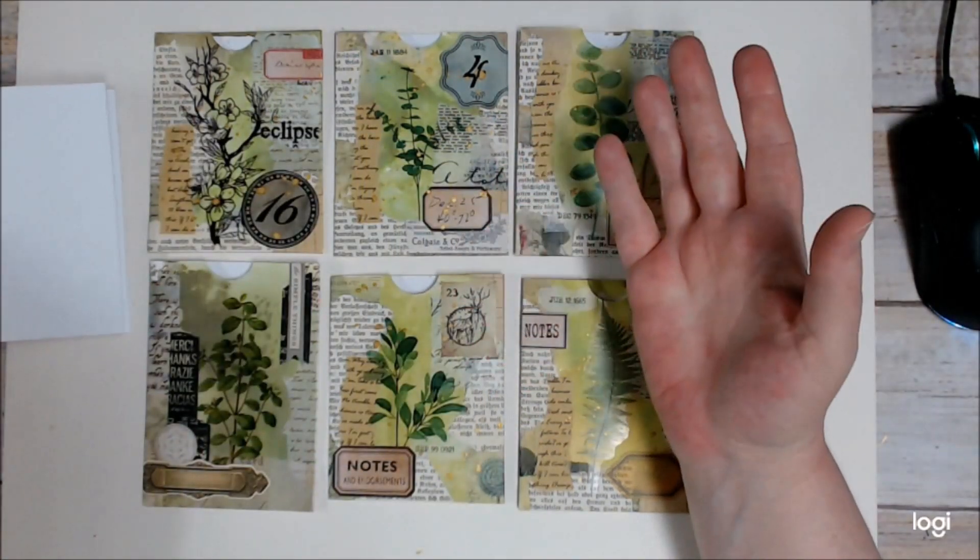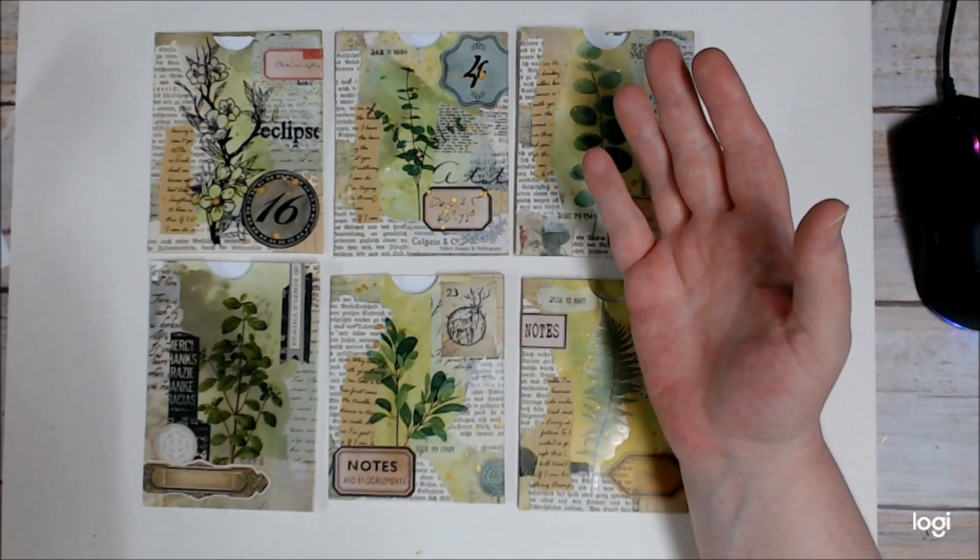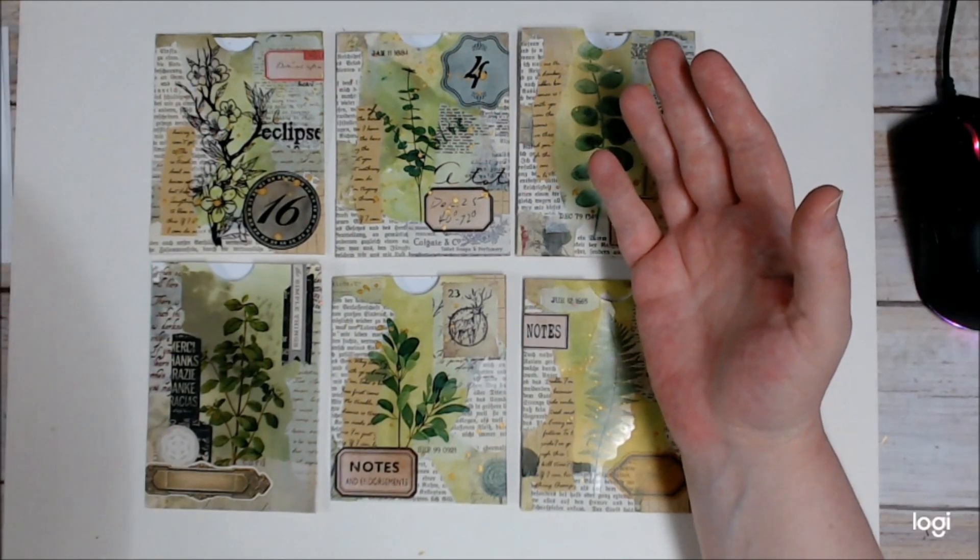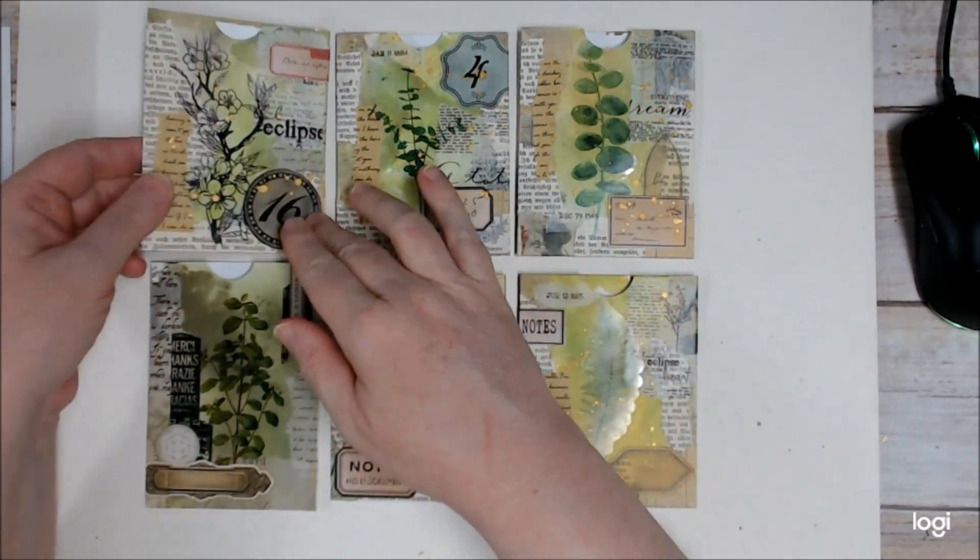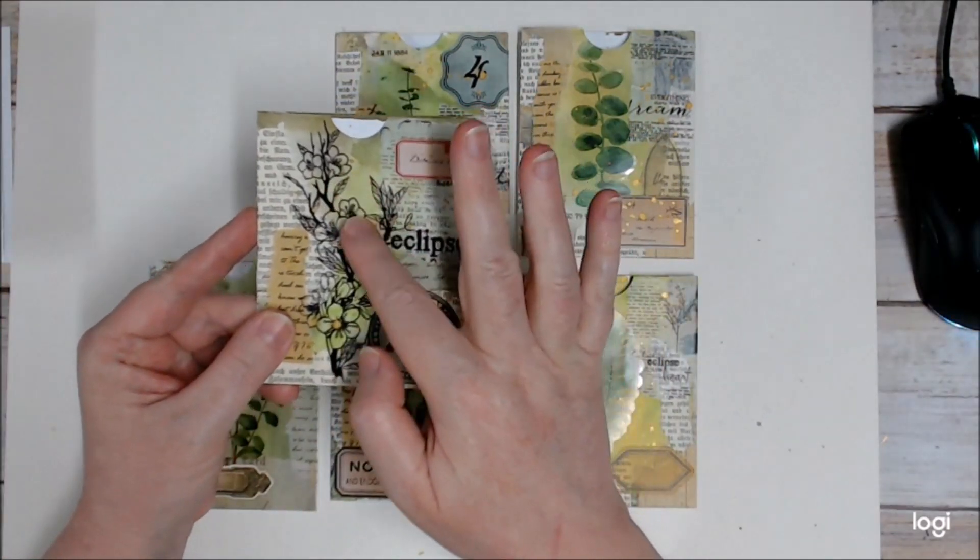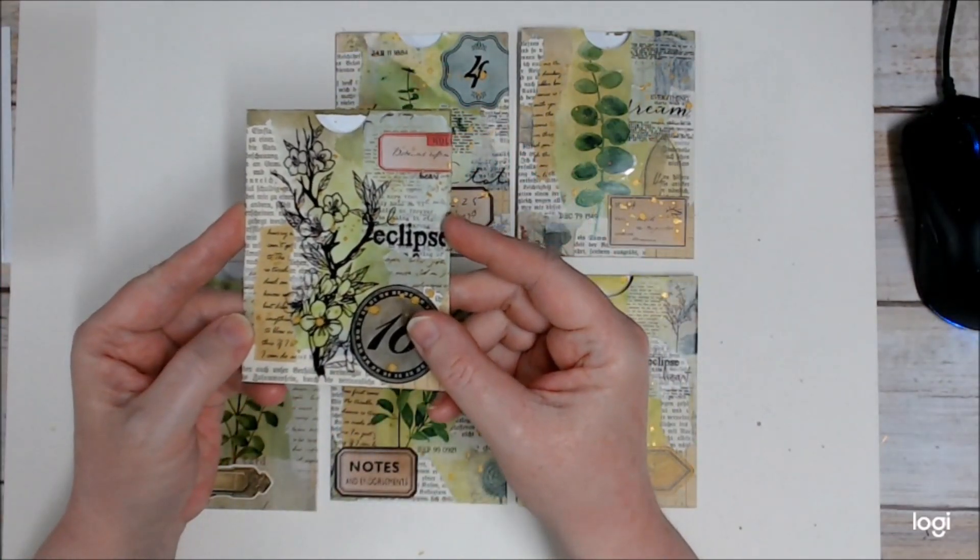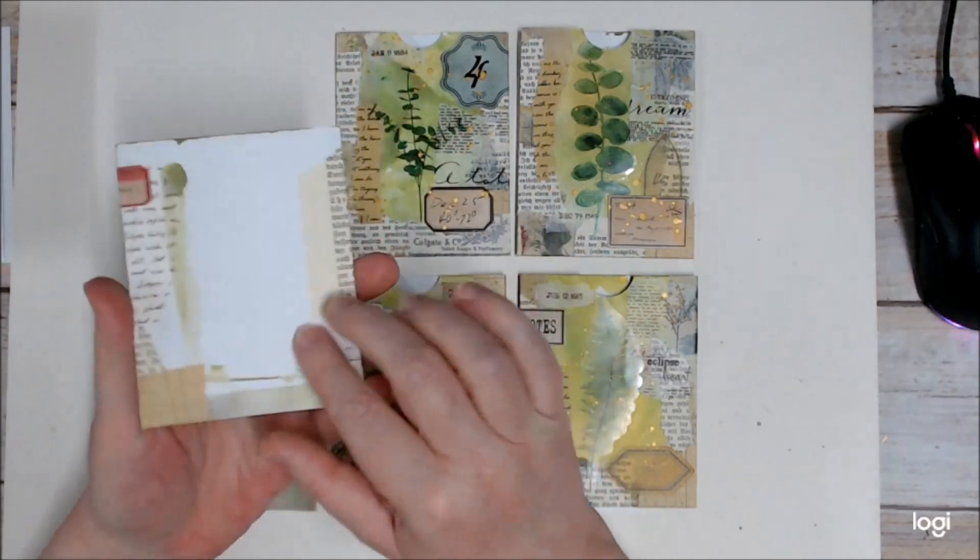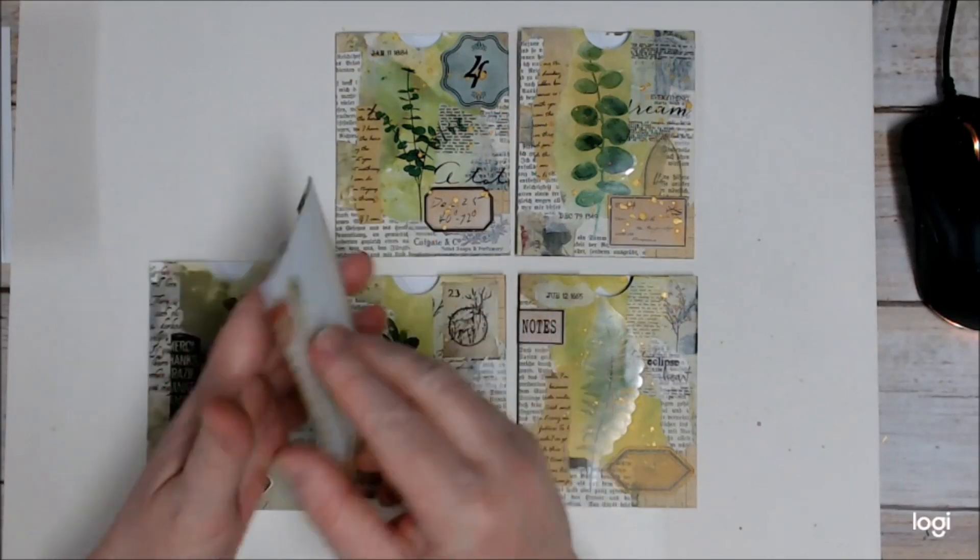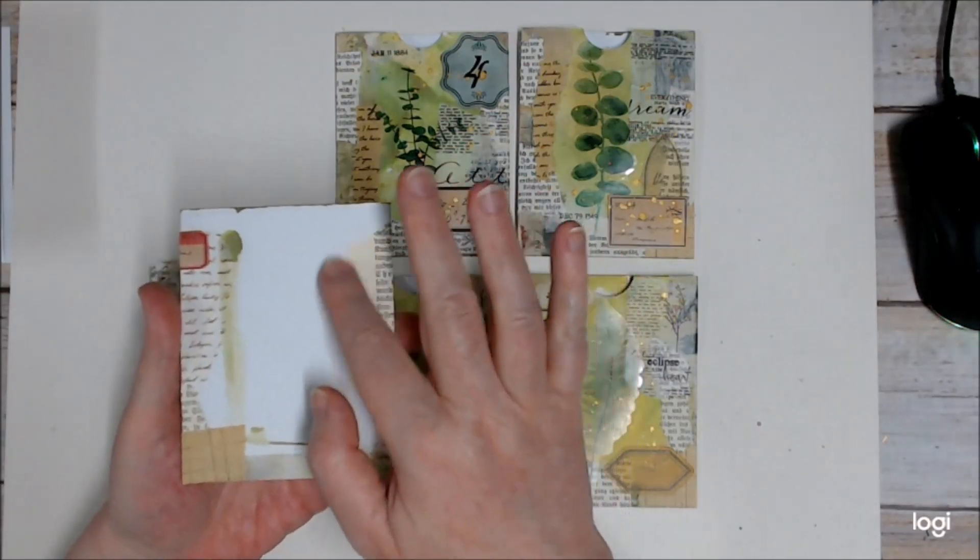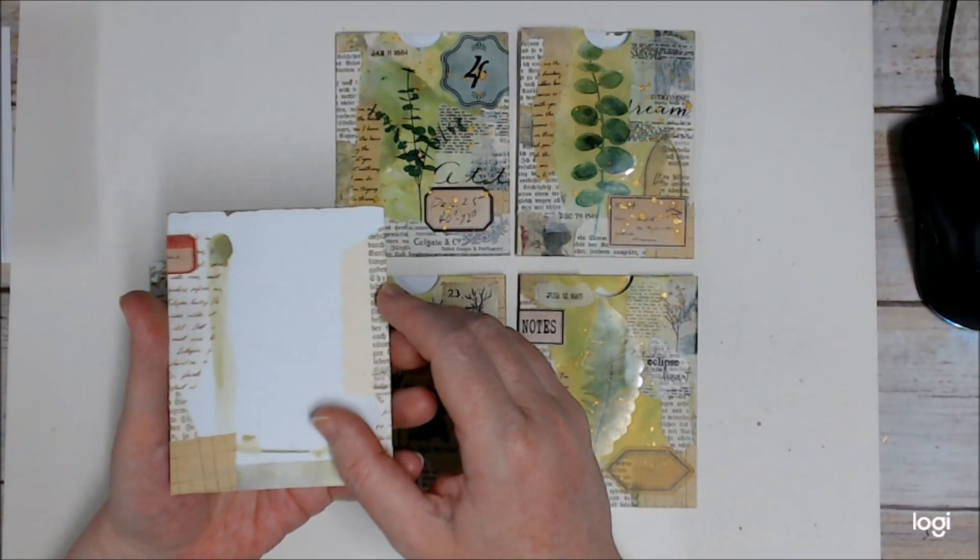Washi tape is something that I have a lot of and don't use very much, so I thought this would be a good project to use some washi tape on. So I've created these pockets and I've colored the background using my Lindy's, and I'll show you how I've done that. The back of my pockets is not finished because I'll probably glue these in, but if I change my mind, I can just pop a piece of coffee dyed paper or something over the back there.